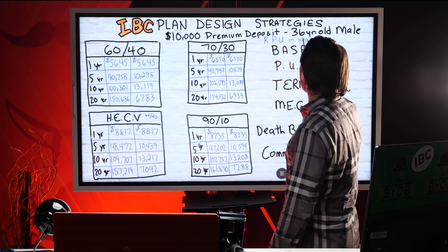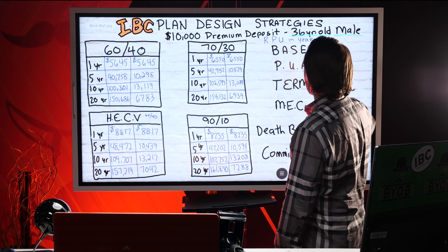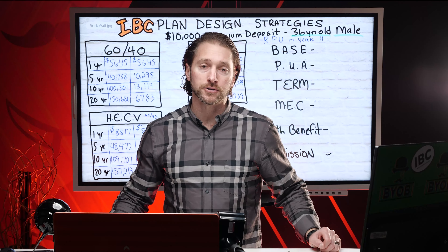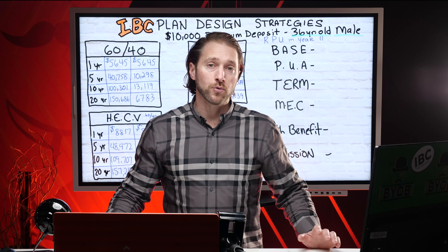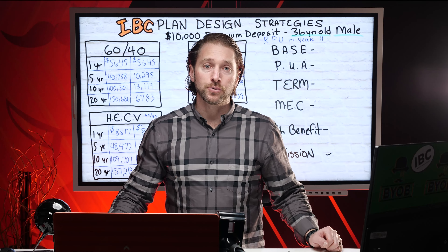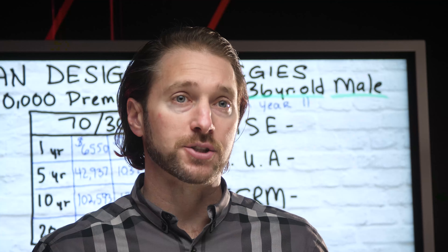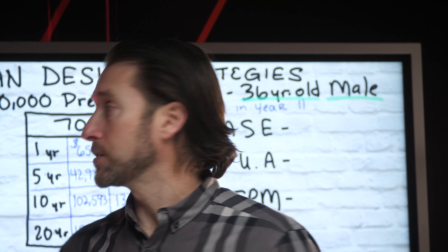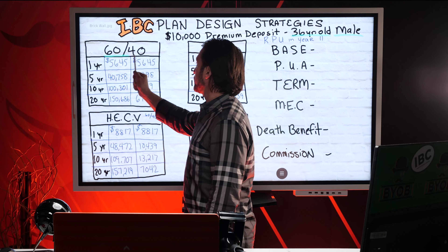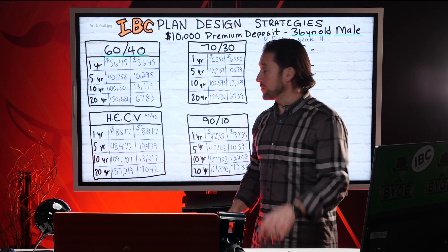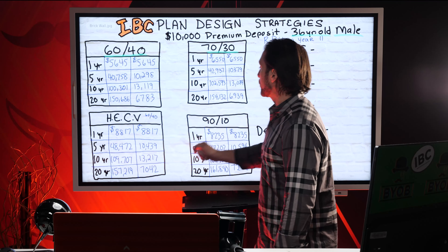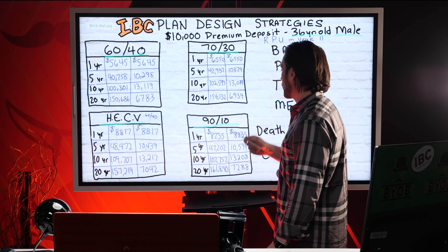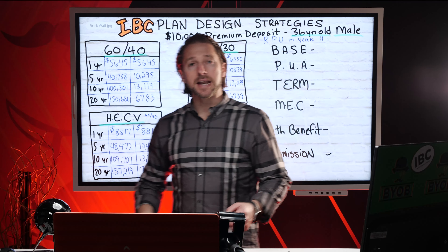We're going to talk about a 36-year-old male putting $10,000 each year for only 10 years into their privatized bank, which is a specially designed and engineered whole life. We're going to look at four different designs: a 60-40, a 70-30, a product called a HEC-V, and another design called a 90-10.